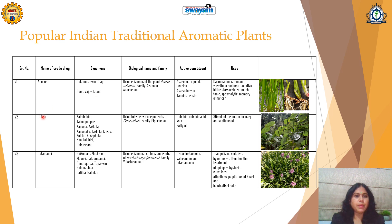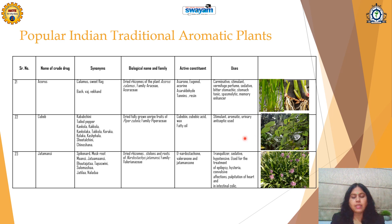It is also found to be a memory enhancer. Then Cubeb, which is called as Kabab chini tail pepper and various other names, is the dried fully grown unripe fruits of Piper cubeba, Family Piperaceae. It contains cubebic acid, cubelene, and fatty oil, along with piperine. It is useful as a stimulant, aromatic, and acts as a urinary antiseptic.